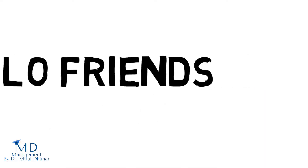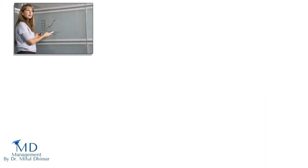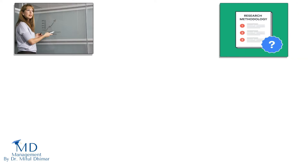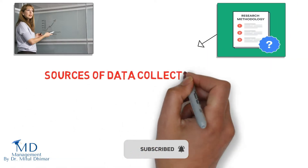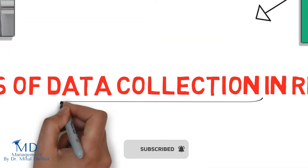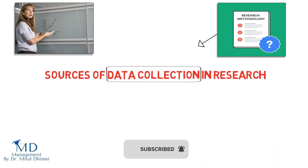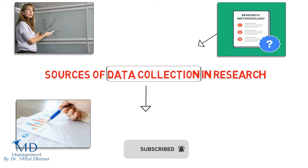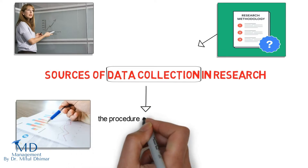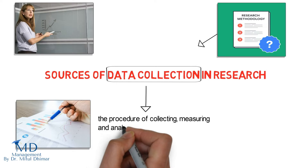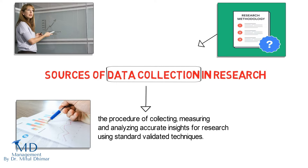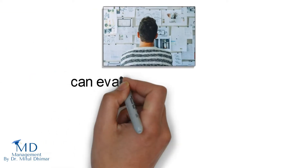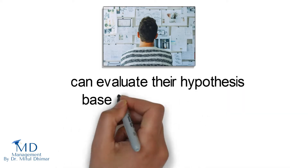Hello friends, today we are going to understand one of the important topics of research methodology, i.e., sources of data collection in research. First of all, let us understand the meaning of data collection. Data collection is defined as the procedure of collecting, measuring and analyzing accurate insights for research using standard validated techniques. A researcher can evaluate their hypothesis based on collected data.